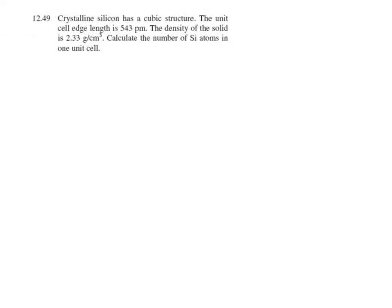Okay, so here's a problem from the end of chapter 12. Crystalline silicon has a cubic structure, and you're told the length of the unit cell is 543 picometers, and the density is 2.33 grams per centimeter cubed.